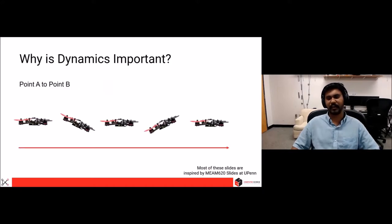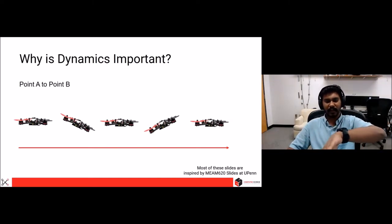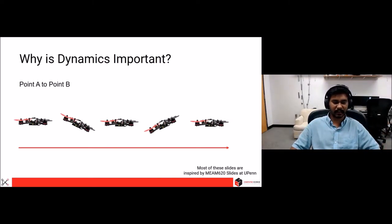So the first question everybody is going to ask is, why is dynamics important? Let's say you have a quadrotor, which is shown on the left-hand side of the frame here, and you want to go to the right-hand side of the frame. The idea is the quadrotor has to tilt and then go to the right-hand side. But the more important thing here is that you cannot just tilt and go and stop at the same point.